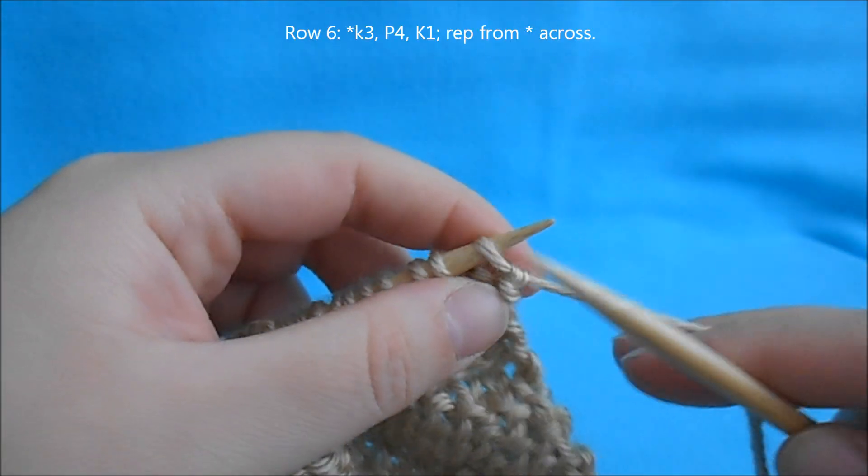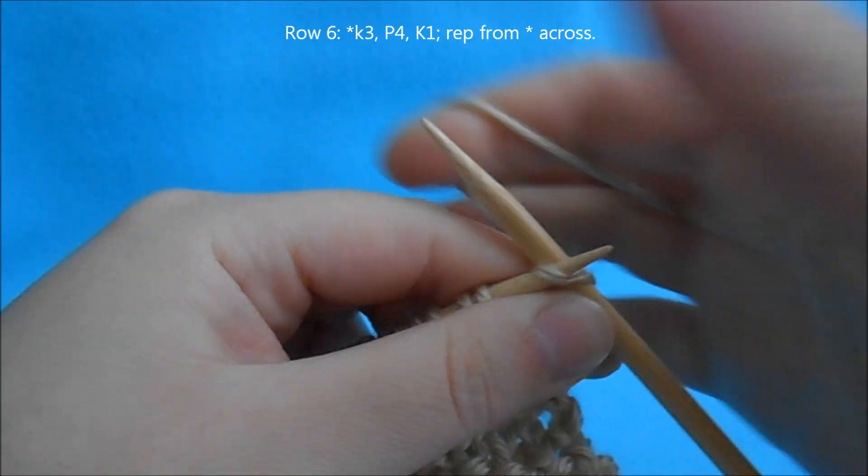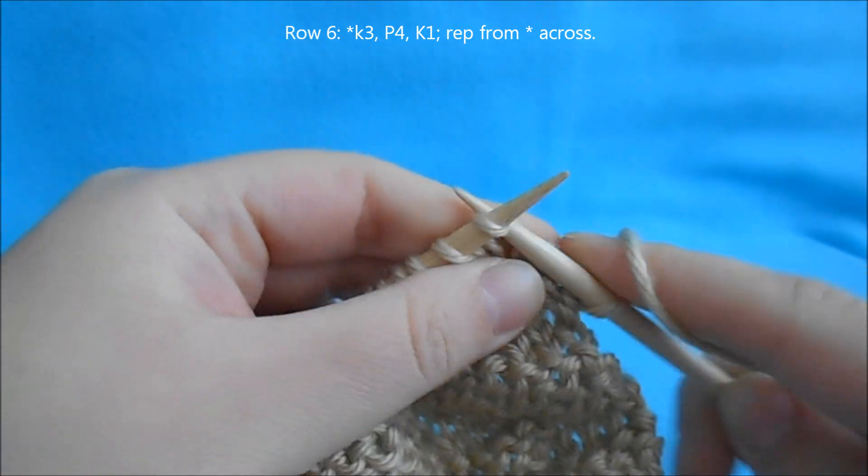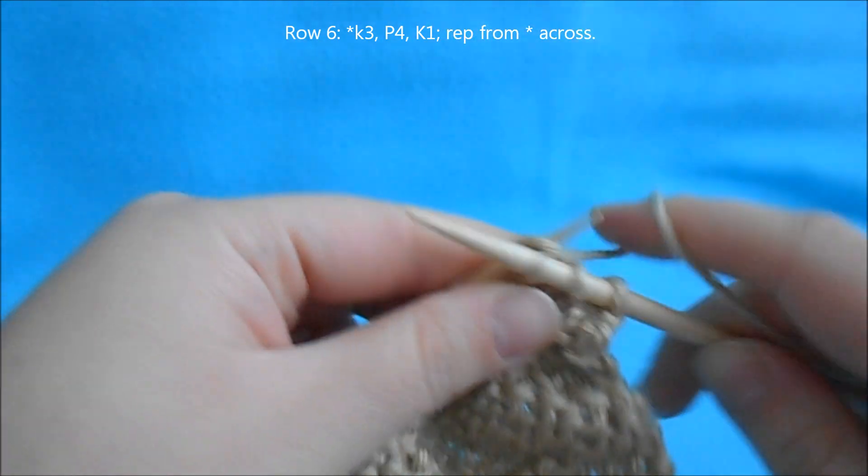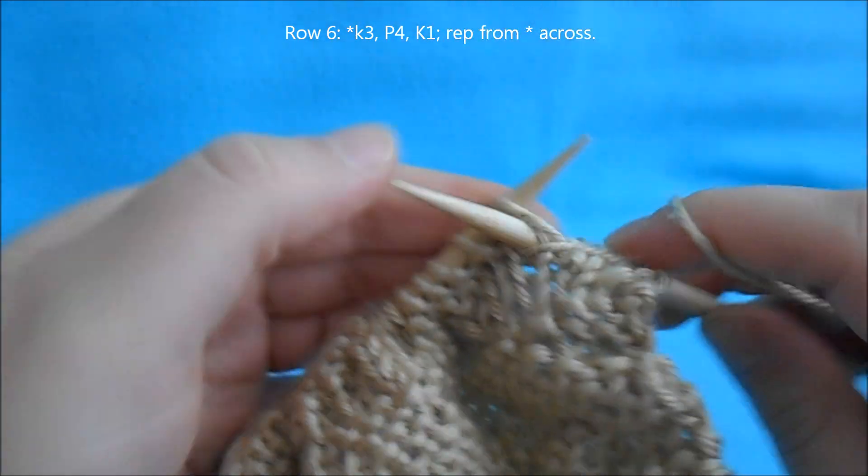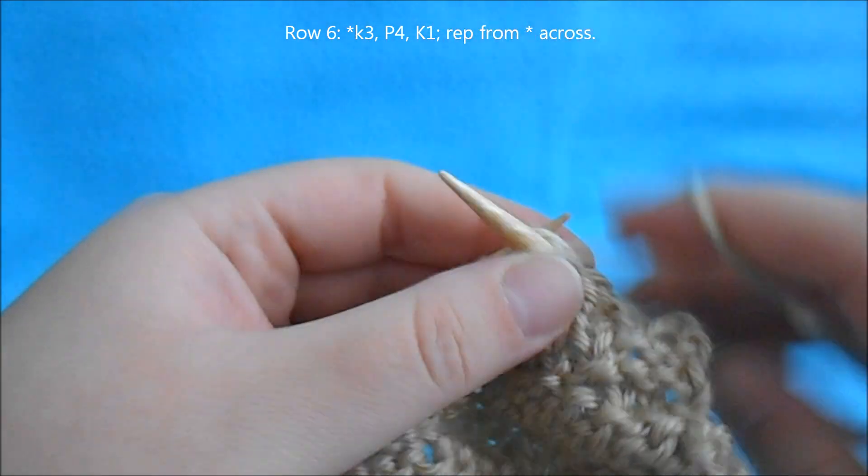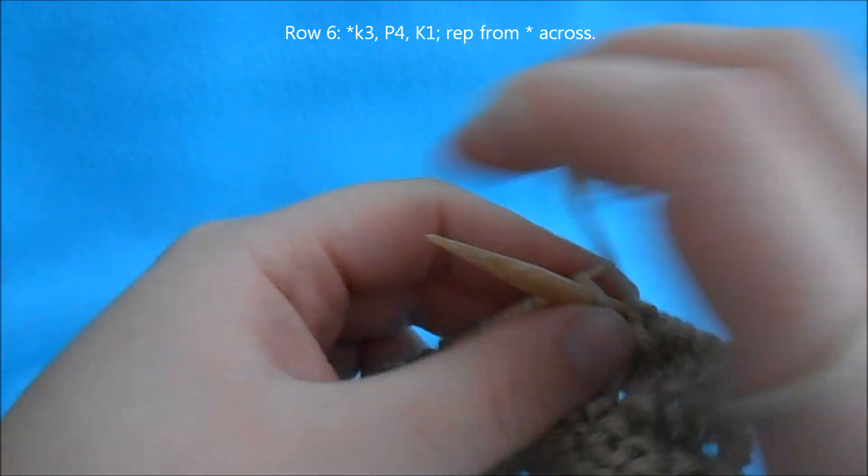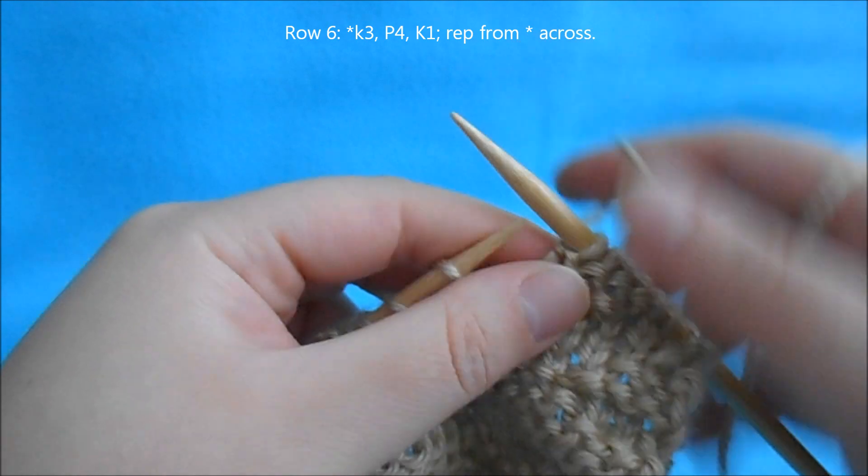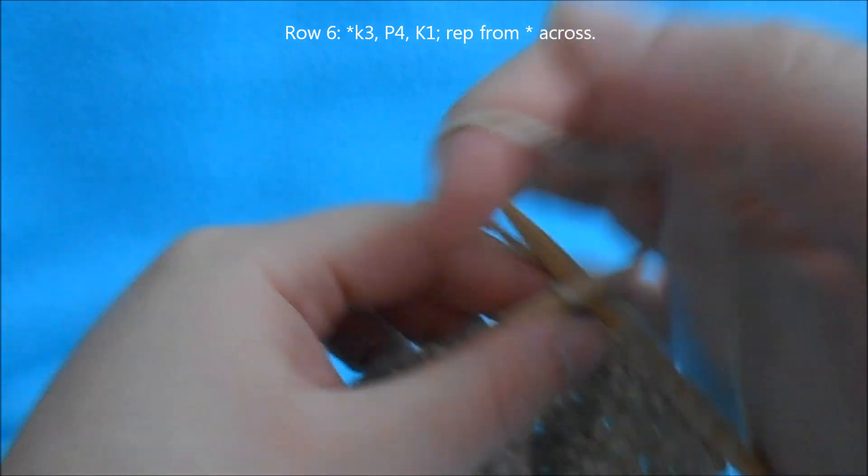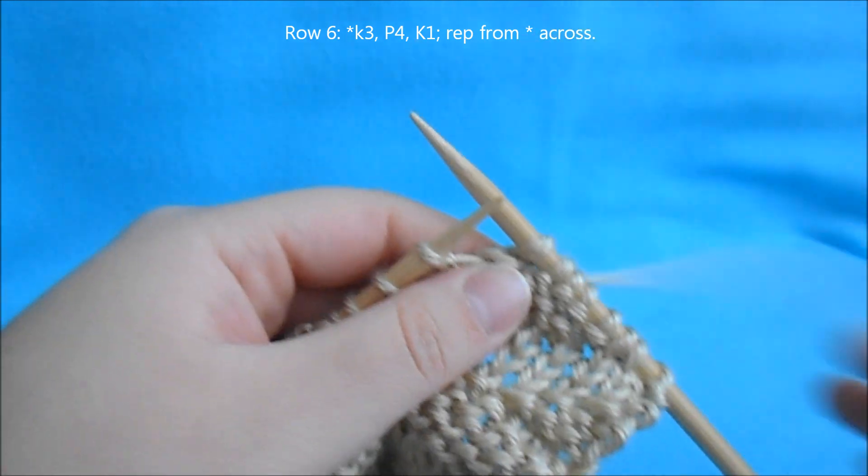For row 6, we're going to begin a repeat of knit 3, purl 4, knit 1, and repeat that all the way across.